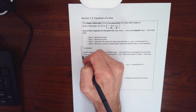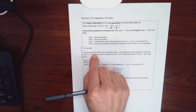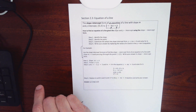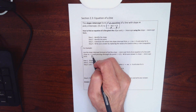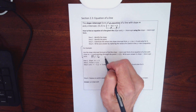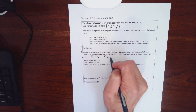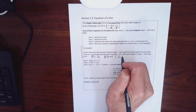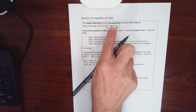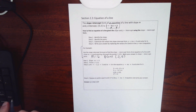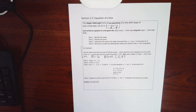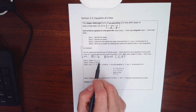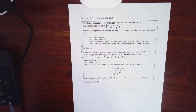Let's do this example: use the slope-intercept formula, y equals mx plus b, to find an equation of a line with slope 6 passing through the point negative 2, 5. The first thing I need to do is identify the slope — super easy, it was given to me as 6.